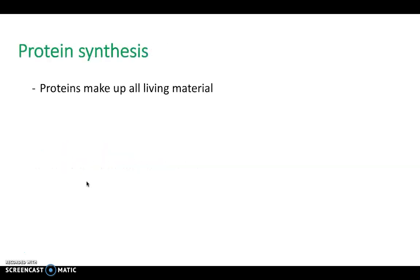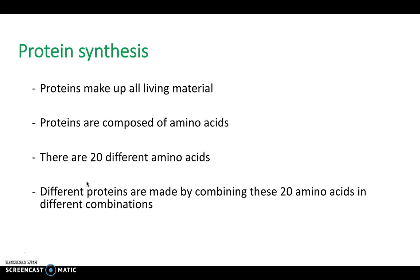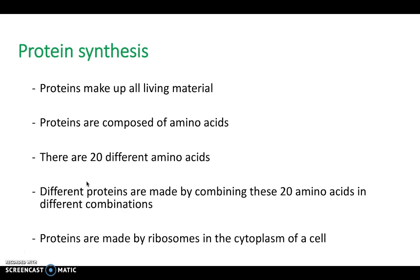Let's have a look at some building blocks. Proteins make up all living material, and proteins are composed of amino acids. There are 20 different amino acids, and by combining these in different combinations, we make up lots of different proteins. Proteins are made by ribosomes in the cytoplasm of a cell.